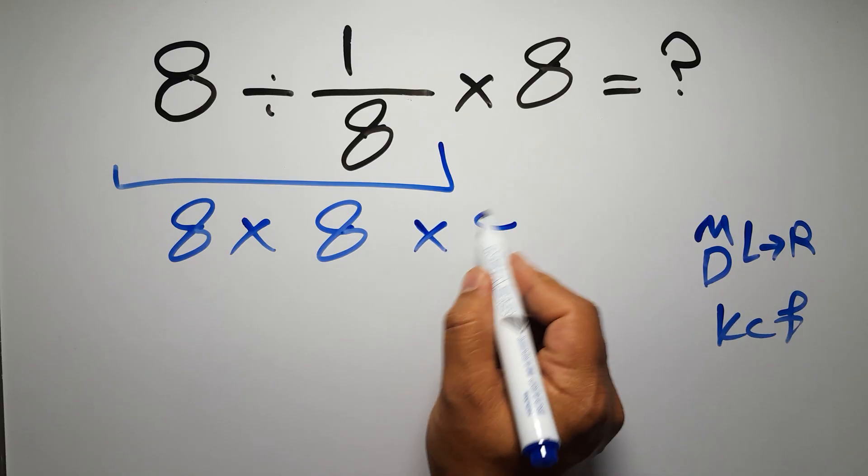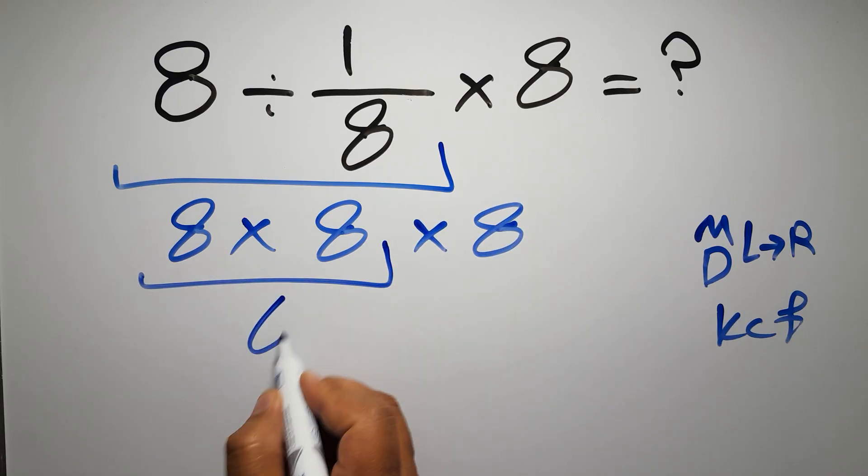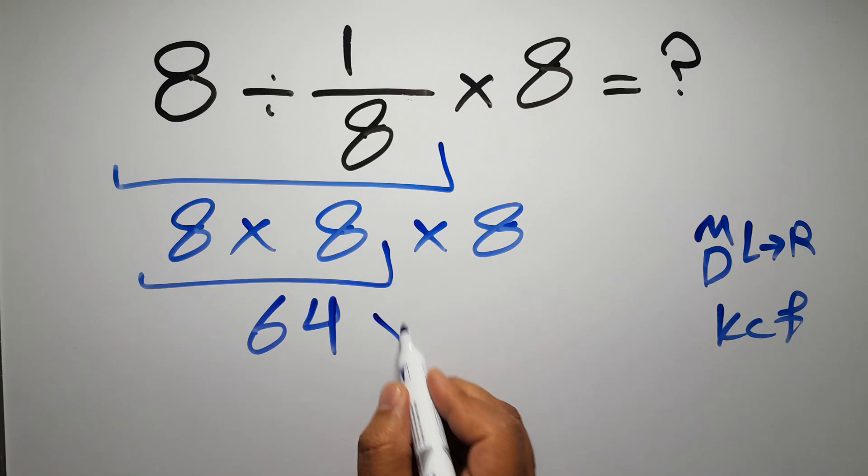And again here we have times 8. 8 times 8 gives us 64, so 64 times 8.